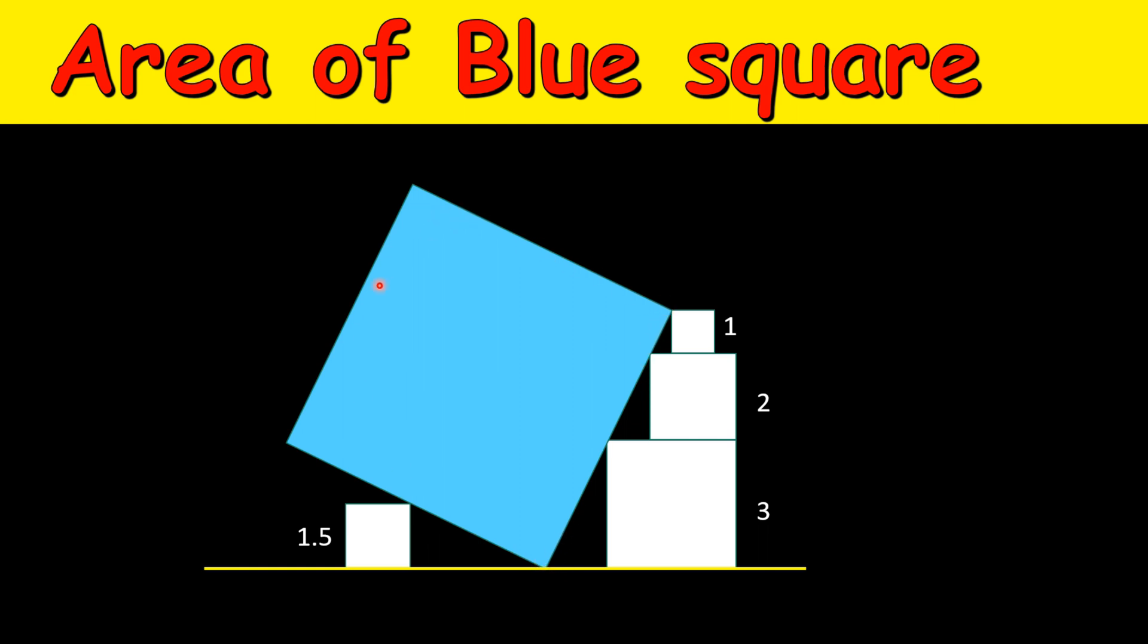So this square is of no use to us. Even if this square was not there, we would have to place this big square at the same angle. If we bend it more, this corner will come down. If we rotate it less, then this corner will go up. So this is useless to us, so let's get rid of it.